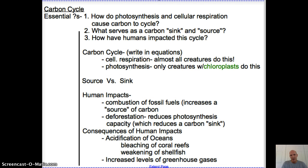Got a little Cornell notes set up for you here, and it'd be a good idea to hit pause and jot this down. Our three essential questions are: one, how do photosynthesis and cellular respiration drive the cycle? Two, what's the difference between a carbon sink and a carbon source? And finally, how have humans influenced the cycle?